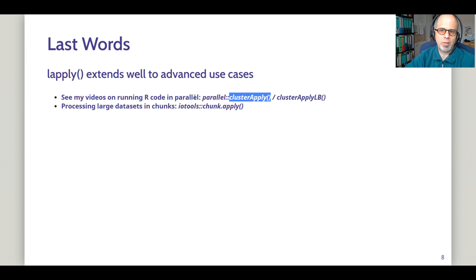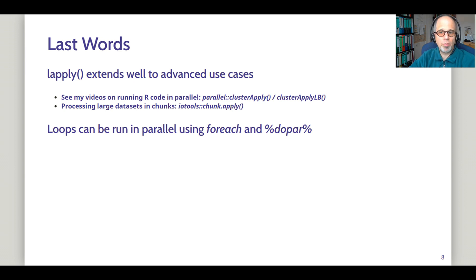Also, when you have large datasets that don't fit in R's memory, you can process the data in chunks. And there's the IO tools package that has a function chunk apply that is also very closely related to this lapply approach. If you have a lot of code that contains loops and you find it tiring or cumbersome to rewrite all this code to avoid the loops, you can also switch to the foreach package and stick with loops but run them in parallel using the dopar adapter.